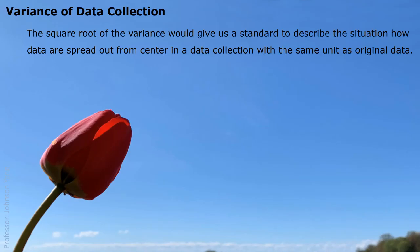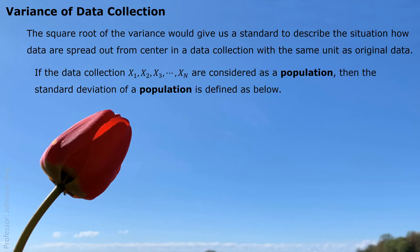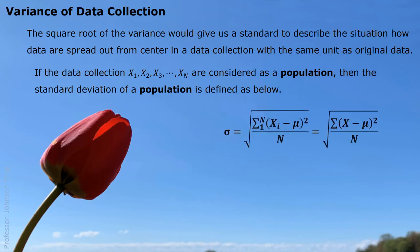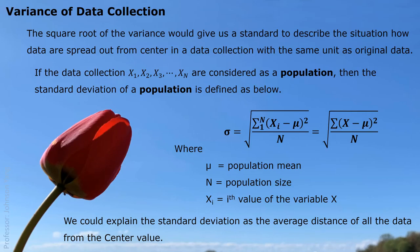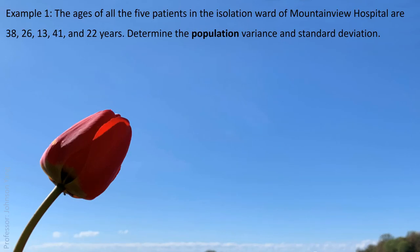The square root of the variance will give us a standard way to describe how data are spread out from the center in the data collection, with the same unit as the original data. That's why we normally use this as a standard. This is called the population standard deviation — it is one more step, the square root based on the variance we just defined. We use sigma to represent the population standard deviation. Population standard deviation can be understood as the average distance of all the data from the center value.